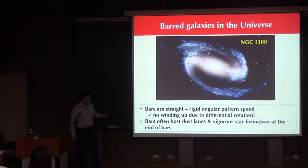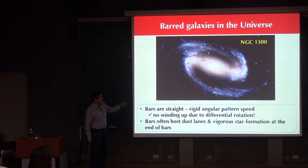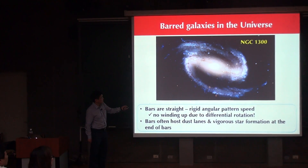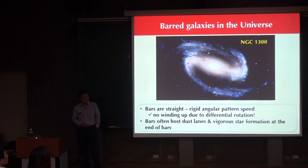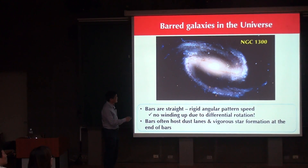If you look more closely at this image, you see two very prominent dust lanes, and you see a lot of bright young bluish stars, but you don't see much star formation at the center of these bar structures. These bright bluish stars are often related to star formation in bar galaxies, so you see little star formation in the central part of the bar.